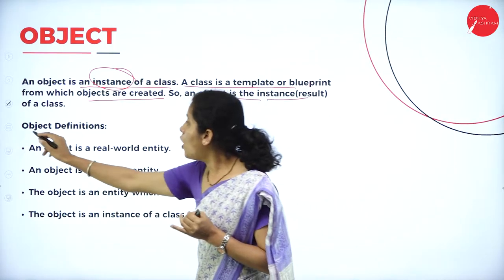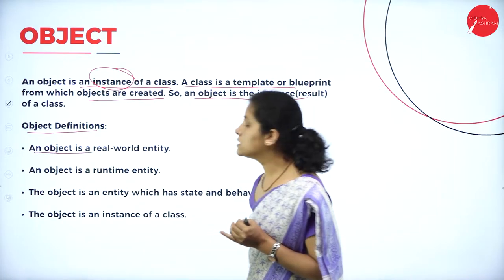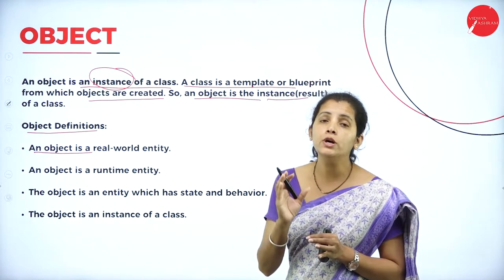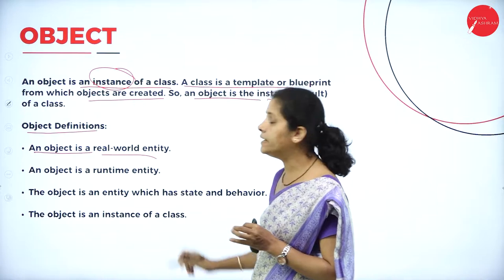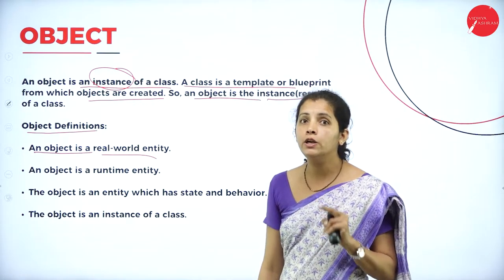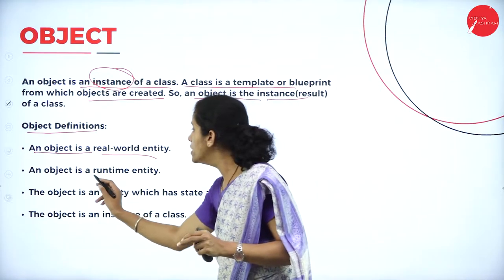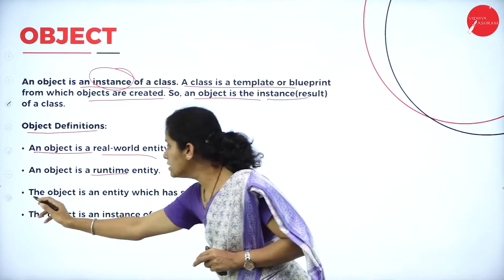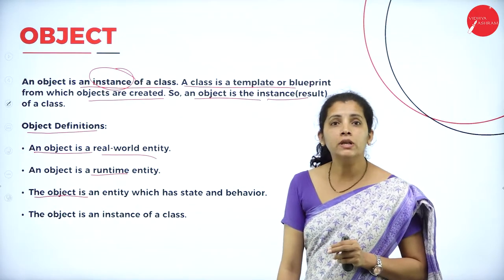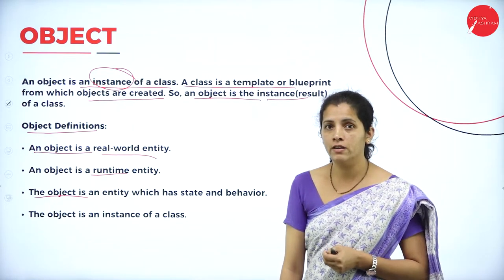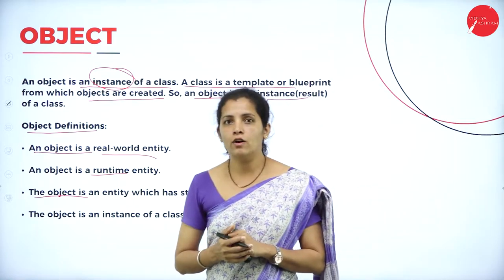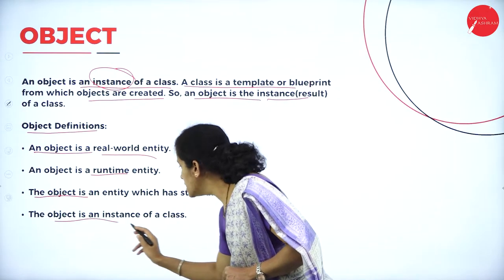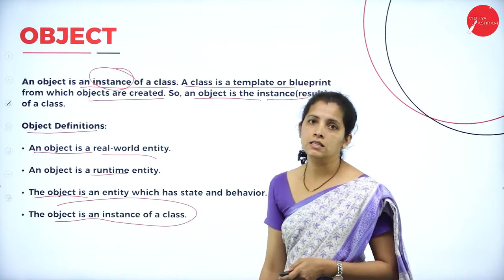Objects always represent real-world entities and are created during execution time — during runtime — for that reason they are called runtime entities. An object is an entity which has state as well as behavior. An object is nothing but an instance or variable of a class.